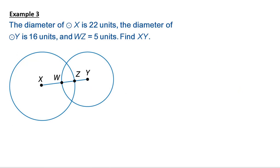Example three. The diameter of circle X is 22 units. The diameter of circle Y is 16 units. And WZ is 5 units. We need to find XY. We need to find the length of this whole segment. This is 5 units.